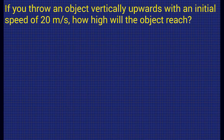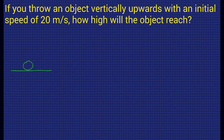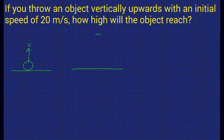I'm throwing an object vertically upwards with an initial speed of 20 meters per second — how high is that object going to get? Imagine throwing a football from the ground. As I throw it up with speed V, it rises until it reaches the top of its path, where its speed is zero because it's stationary at the top.